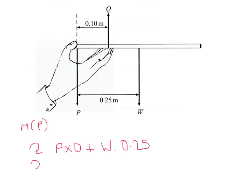And going the opposite direction, going anticlockwise, we've got Q times 0.1. And we know that when these are resolved, it should end up being zero. So what you actually get is that 0.1Q is equal to 0.25W.